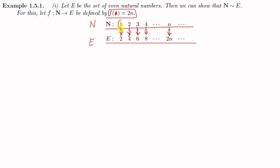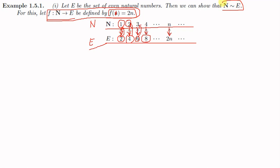Every element of N has a different image in E, so the function f from N to E is one-to-one. To check whether it is onto: the pre-image of 2 is 1, the pre-image of 4 is 2, the pre-image of 6 is 3, and so on — every element of E has a pre-image in N which is half of that element. So f is onto. Since f is both one-to-one and onto, N ~ E, meaning N and E have the same cardinality.